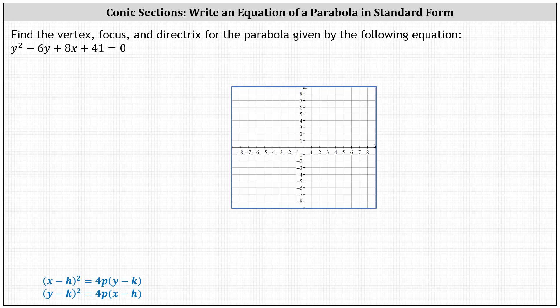We're asked to find the vertex, focus, and directrix for the parabola given by the equation y squared minus 6y plus 8x plus 41 equals zero. To find the vertex, focus, and directrix, we'll write the equation of the parabola in standard form, which is one of the two forms below.